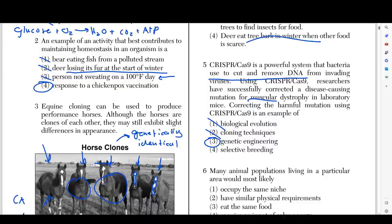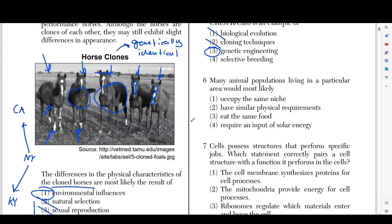Number six says many animal populations living in a particular area would most likely do what? If you have many populations living in an area, they would have different niches. The thing with ecosystems is each animal has its own unique place in the environment called a niche.